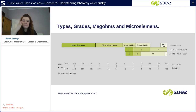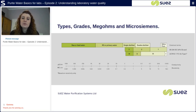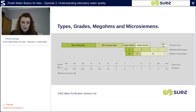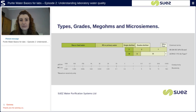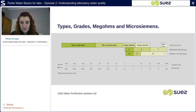Taking values off the graph: type one water has a value of 18.2 megaohms, which is equivalent to 0.055 microsiemens conductivity. Type two water has a value of greater than one megaohm resistivity, which equates to a conductivity of less than one microsiemens. Type three water has a value of greater than four megaohms, which is equivalent to 0.25 microsiemens conductivity.